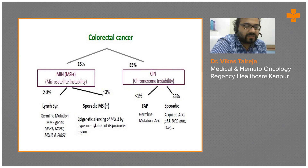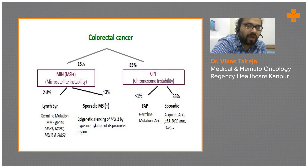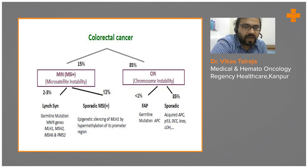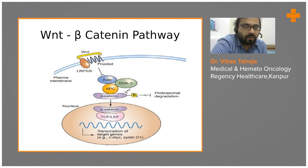Among sporadic MSI cases, the instability is caused by epigenetic silencing of MLH1 through hypermethylation of its promoter. Among the 85 percent with chromosomal instability, less than one percent are familial due to germline APC mutations, while 85 percent are sporadic — caused by APC, TP53, DCC, KRAS, or loss of heterozygosity.